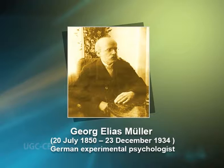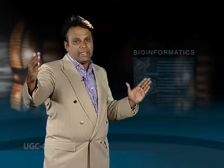Interference was discovered by Georg Elias Muller, a German experimental psychologist credited with the theory of retroactive interference, in 1911. The interference is inversely proportional to the crossing over percentage. Interference is maximum over a short distance and decreases as the distance increases.